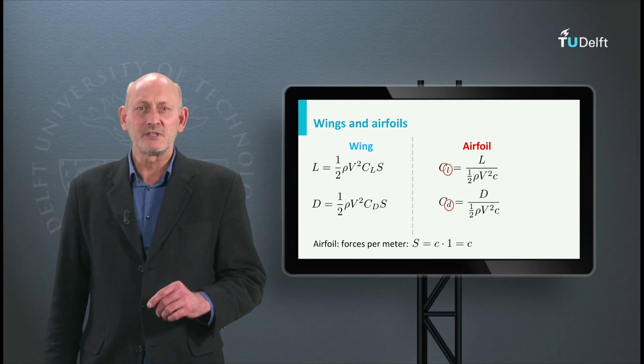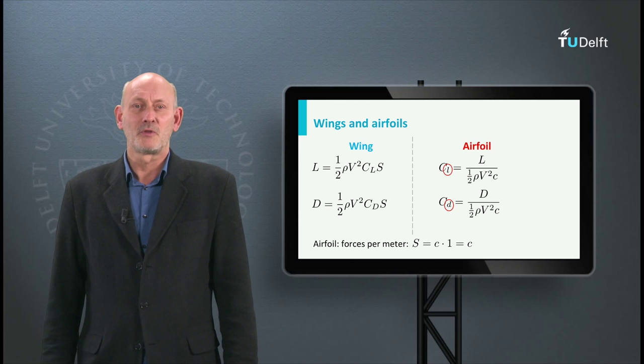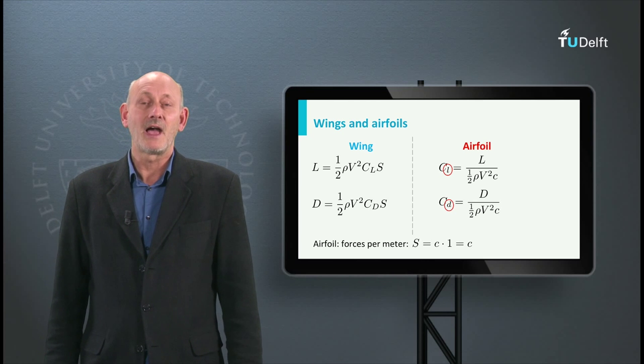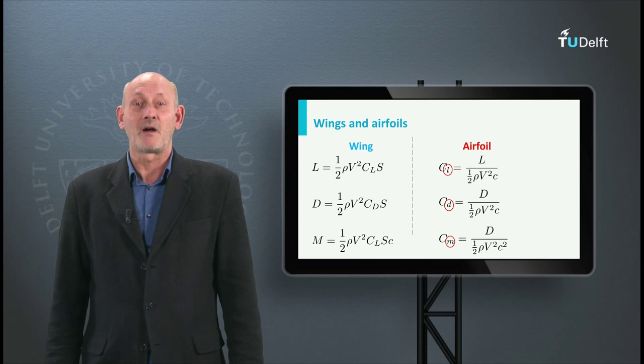Note that, to show the difference, for the airfoil we use the small l and d and for the wing the capital L and d as subscript. Note the C squared in the moment coefficient equation coming from the lever arm.